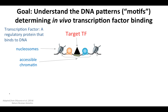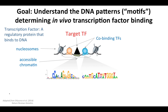The goal of this work is to understand the DNA patterns — that is the motifs — that determine in vivo transcription factor binding, where a transcription factor is just a regulatory protein that binds to DNA. These proteins have affinities to certain patterns in the sequence that we refer to as motifs, and they also co-bind with other transcription factors that have their own sequence affinities. So our goal is to understand these combinations of sequence patterns or motifs that determine the binding of a particular transcription factor.